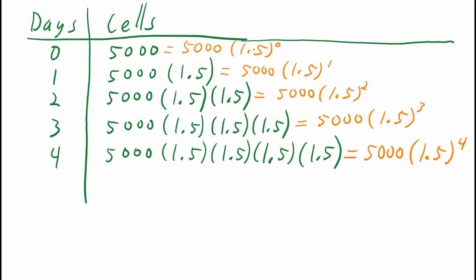So let's think about how we can use this to figure out how many cells there are after 35 days. Well, we notice that with each time, each day, the day matches the exponent.